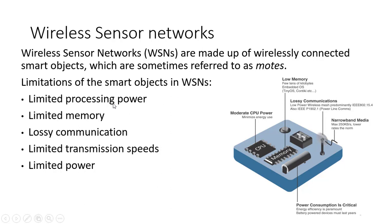Wireless sensor networks are made up of wirelessly connected smart objects, sometimes called nodes. Limitations of smart objects in wireless sensor networks include limited processing power, limited memory, limited transmission speed — you won't get the data rates you're used to on the internet — and very limited power.